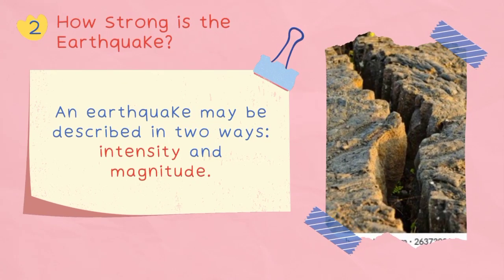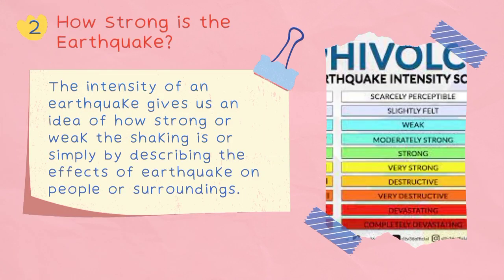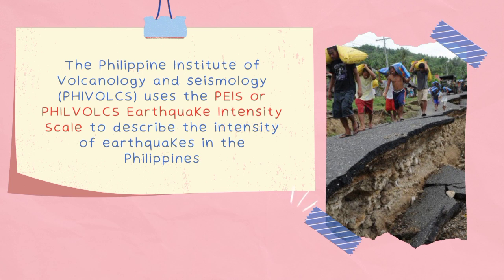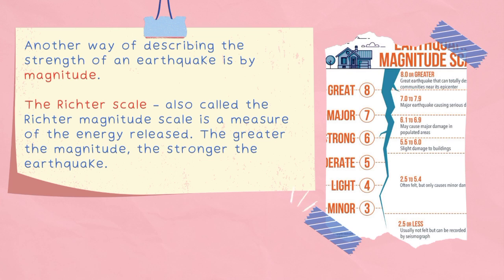How strong is the earthquake? An earthquake may be described in two ways: intensity and magnitude. The intensity of an earthquake gives us an idea of how strong or weak the shaking is, or simply by describing the effects of the earthquake on people or surroundings. The Philippine Institute of Volcanology and Seismology, or PHIVOLCS, uses the PEIS or PHIVOLCS Earthquake Intensity Scale to describe the intensity of earthquakes in the Philippines. Another way of describing the strength of an earthquake is by magnitude. The Richter scale, also called the Richter magnitude scale, is a measure of the energy released. The greater the magnitude, the stronger the earthquake.